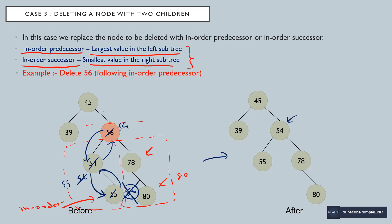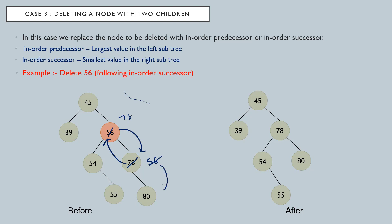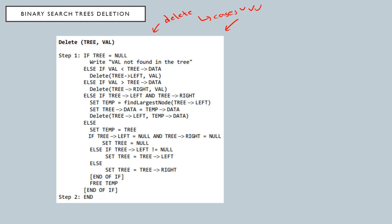In the final tree, 54 and 55 will be in place. If we use in-order successor instead, we consider the right subtree. The swapping happens like this: 78 is replaced with 56 and 56 with 78, and again 56 is replaced with 18 and 18 with 56. Now the node to delete is at the leaf so we simply delete it. The final tree will have 78 and 80 in place. Those are the three cases of deletion.